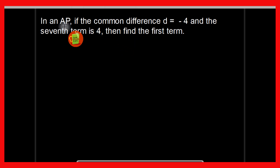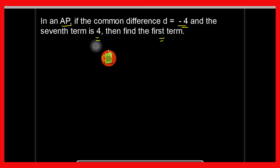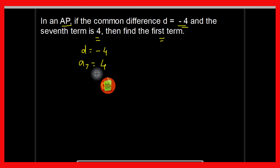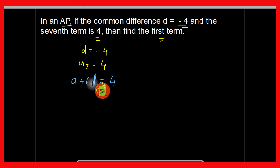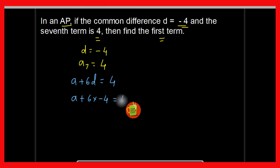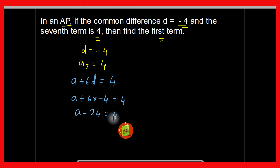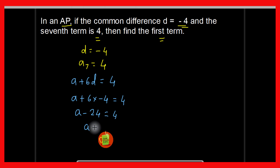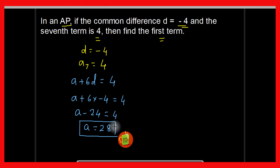Now the last question of today's episode: in an AP, if the common difference is minus 4 and the 7th term is 4, find the first term. Here d equals minus 4 and a7 equals 4. We know a7 equals a plus 6d, which equals 4. Substituting d equals minus 4: a plus 6 into minus 4 equals 4, so a minus 24 equals 4. Taking 24 to the other side: a equals 4 plus 24 equals 28. Therefore the first term of the given AP is 28.